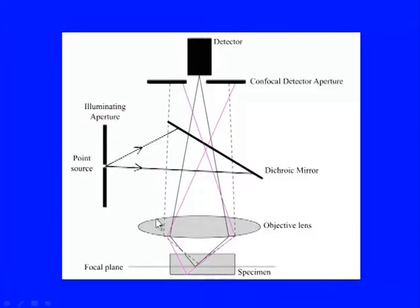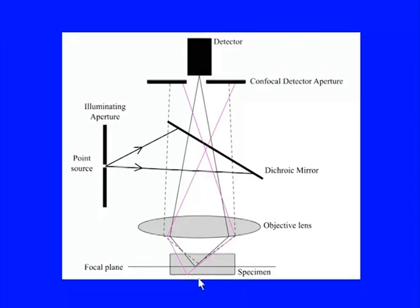Here is a schematic of the optics of a confocal microscope. There is an illuminating aperture through which the lasers are pointed at the dichroic mirror — the beam splitter. Lasers are required because high intensity and focused illumination is needed. These lasers are then focused through the objective lens onto the specimen. Rather than illuminating the whole specimen, the laser is focused onto a particular point in the specimen.